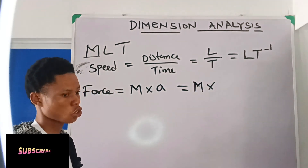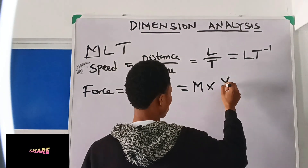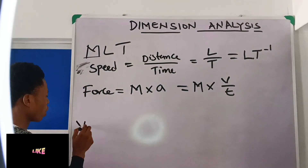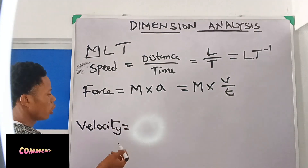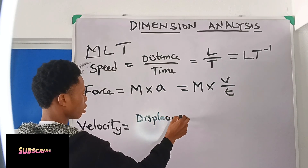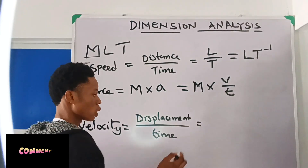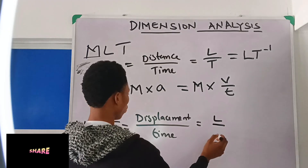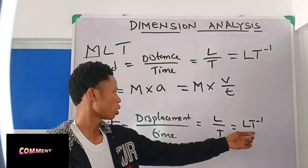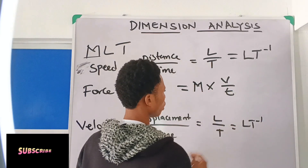Acceleration is change in velocity all over time. If you are asked to find the dimension of velocity, velocity is displacement over time. Displacement is distance, and distance is length. So velocity is length over time, which is LT⁻¹. So velocity and speed have the same dimension: LT⁻¹.